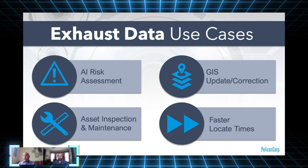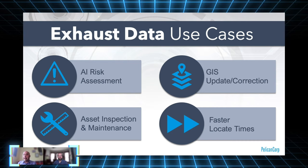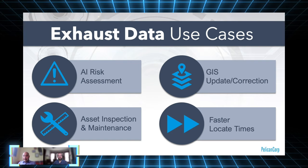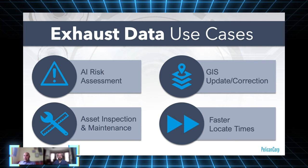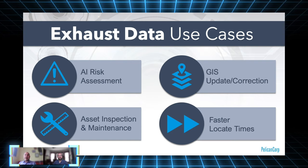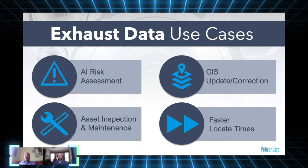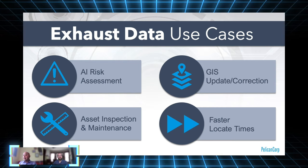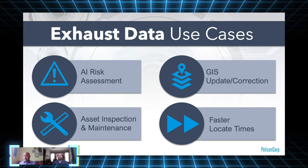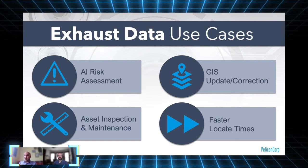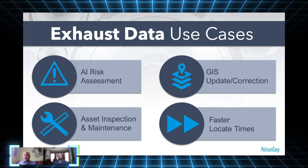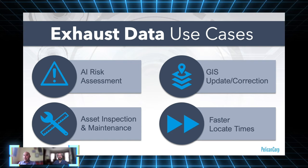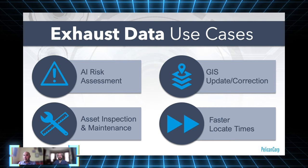The final point is faster locate times. We've talked before on Take 5 about the volume and variability and the issues the industry faces — it's all about technology and efficiency. Collecting a lot of this data and using it can lead to faster locate times, meaning you're not reinventing the wheel every time. There's a ton of this information that can be used to crank up the efficiency of a big part of the locate process.